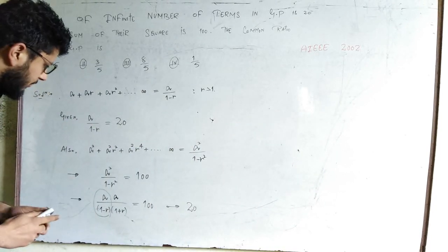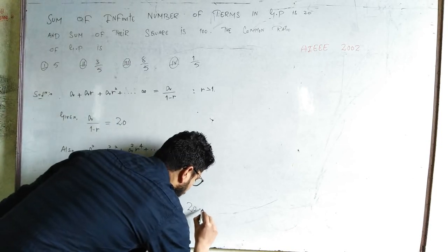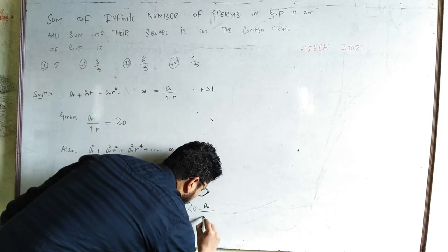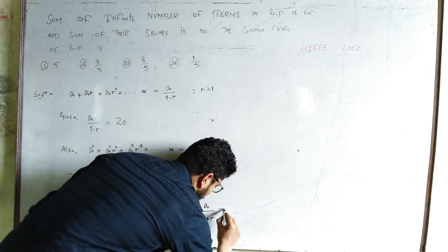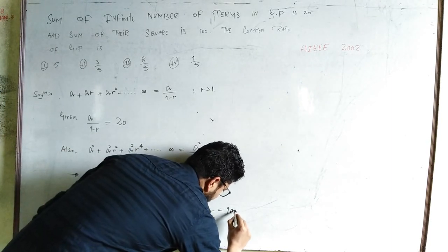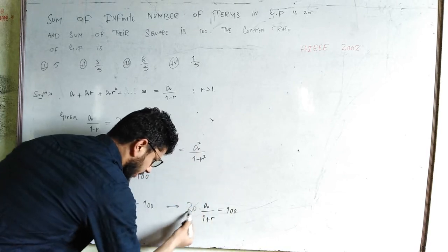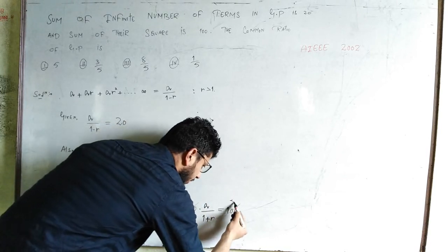20 times a/(1+r) = 100. Simplifying, we get a/(1+r) = 5.